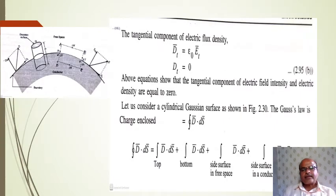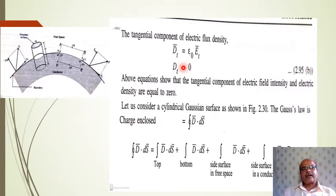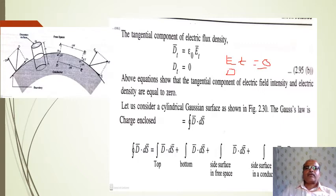After finding the tangential component of electric field intensity, we find the tangential component of electric flux density. DT = ε₀·ET. Since ET = 0, we get DT = 0. Therefore the two boundary conditions found so far are: the tangential component of electric field intensity ET = 0, and the tangential component of electric flux density DT = 0.